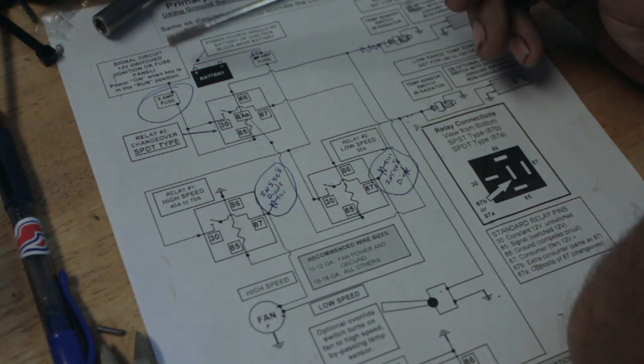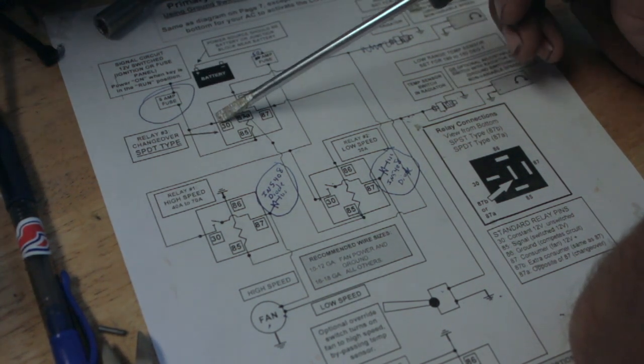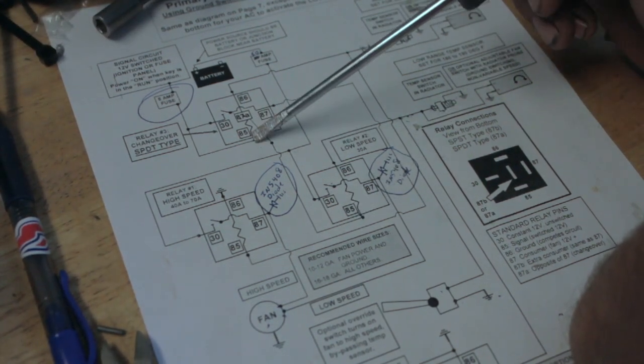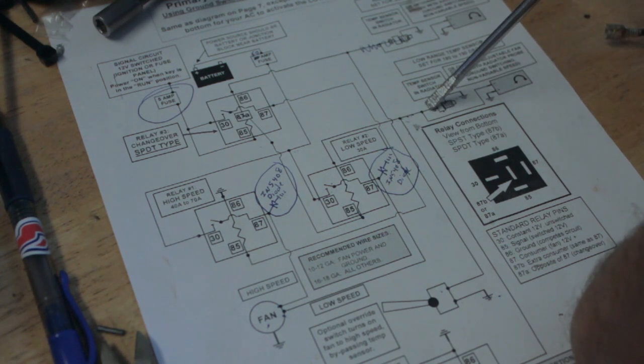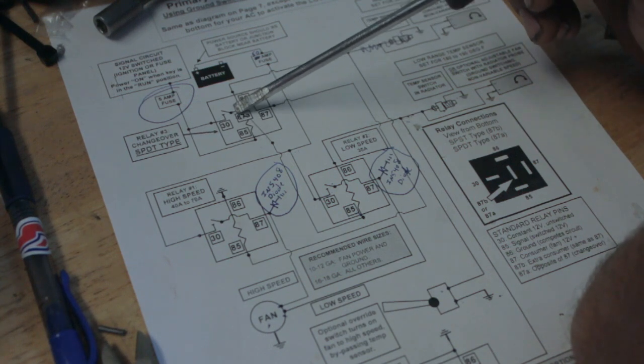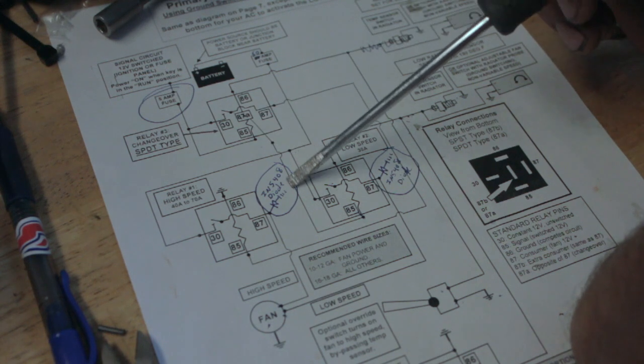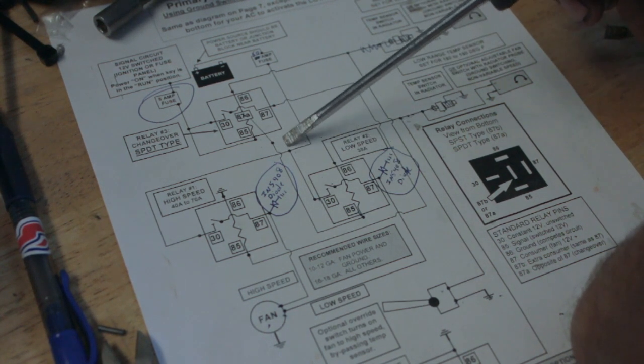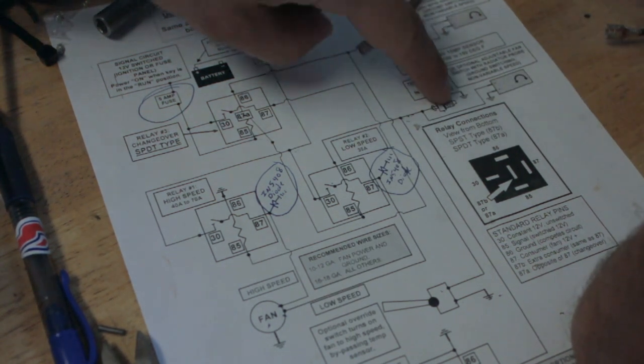So this is running in low speed right now, and you want to kick it into high speed. As soon as you close this ground, the switching relay, this is going to open up and this is going to close. On typical operation, when you're using your sensor to turn your fan on and off, since this has power to here, to here, it goes up and backs down to here. This is energized all the time. As soon as this closes the ground, it closes this. So this relay is basically sitting here idle. It's not closed.